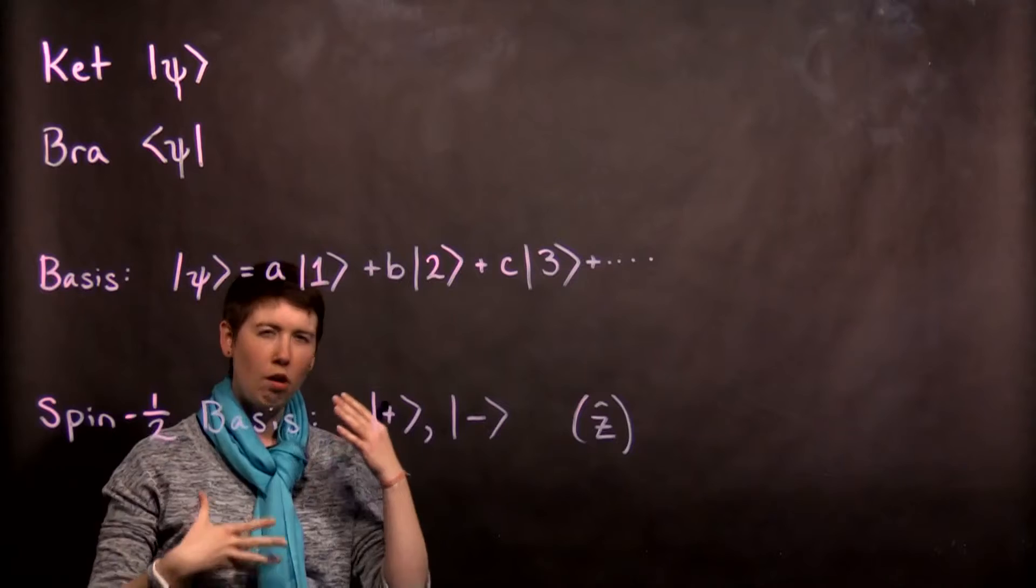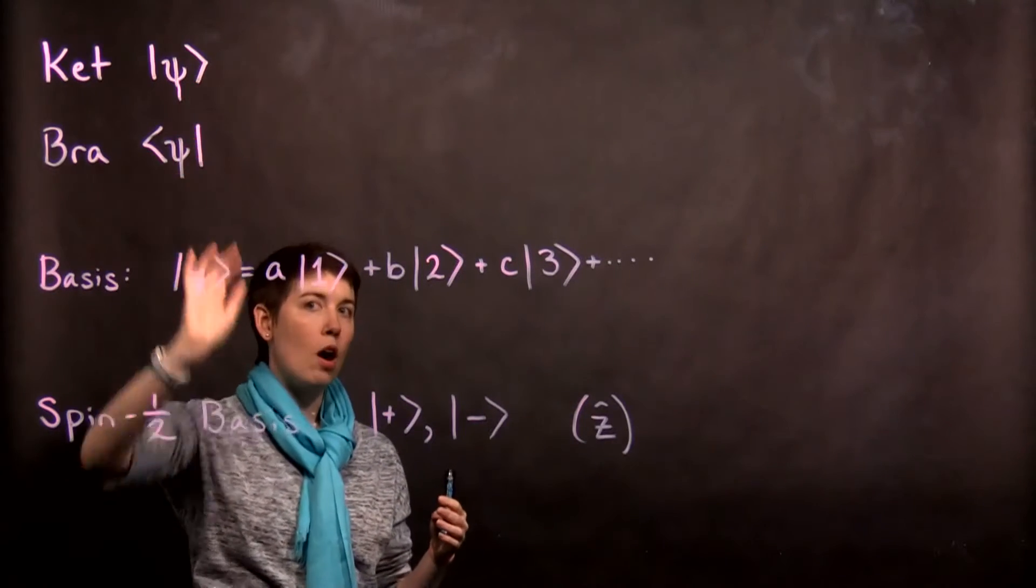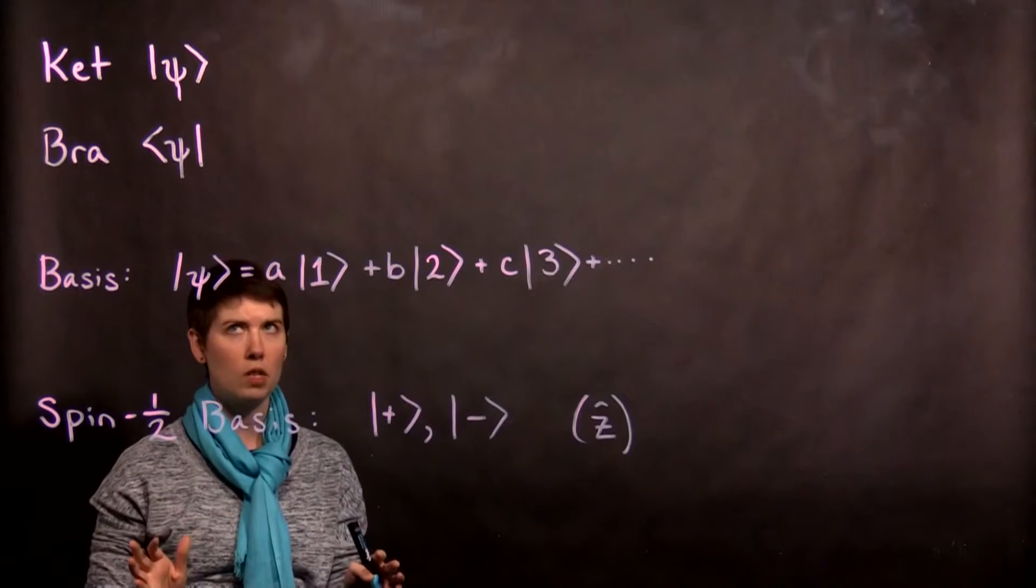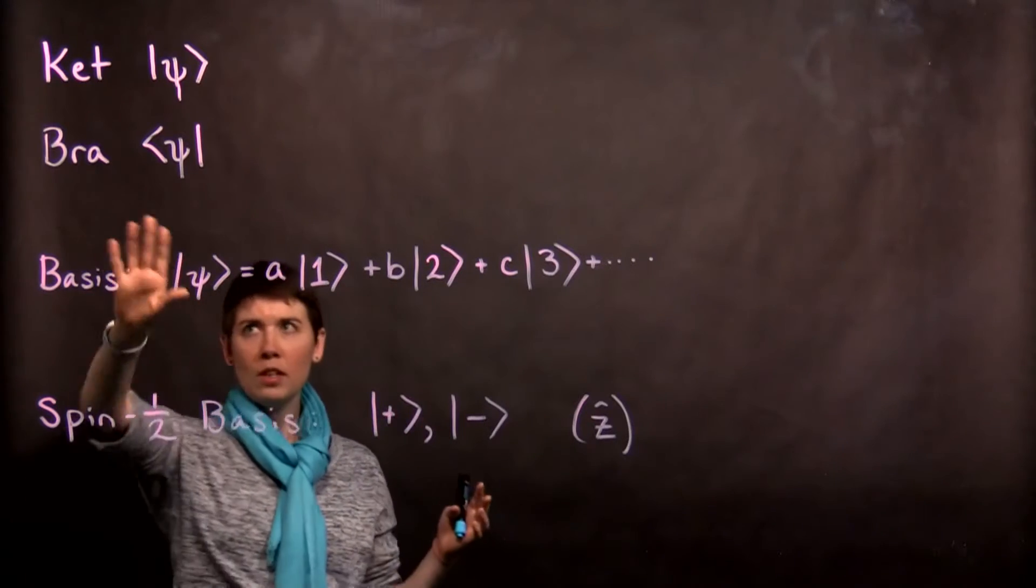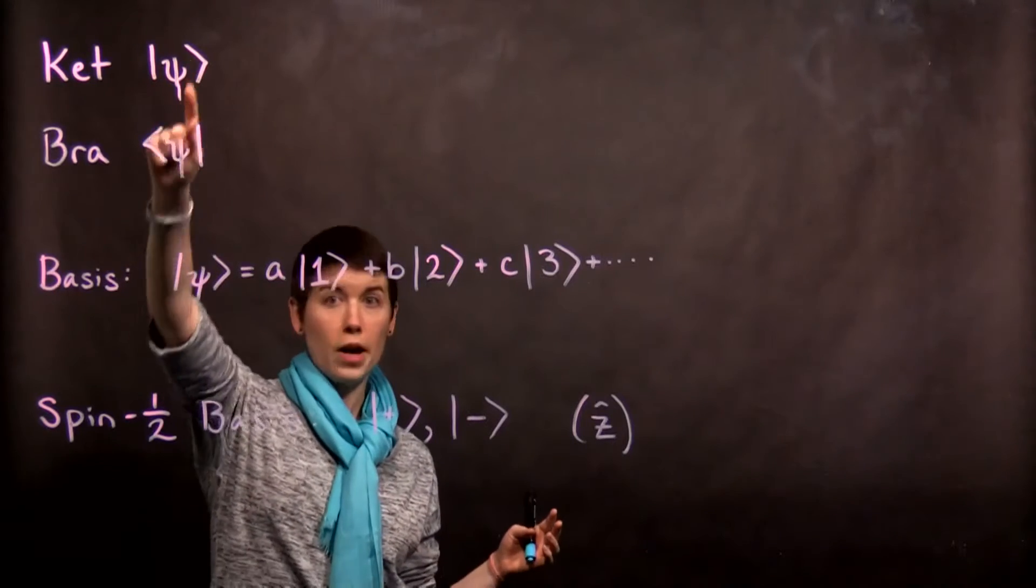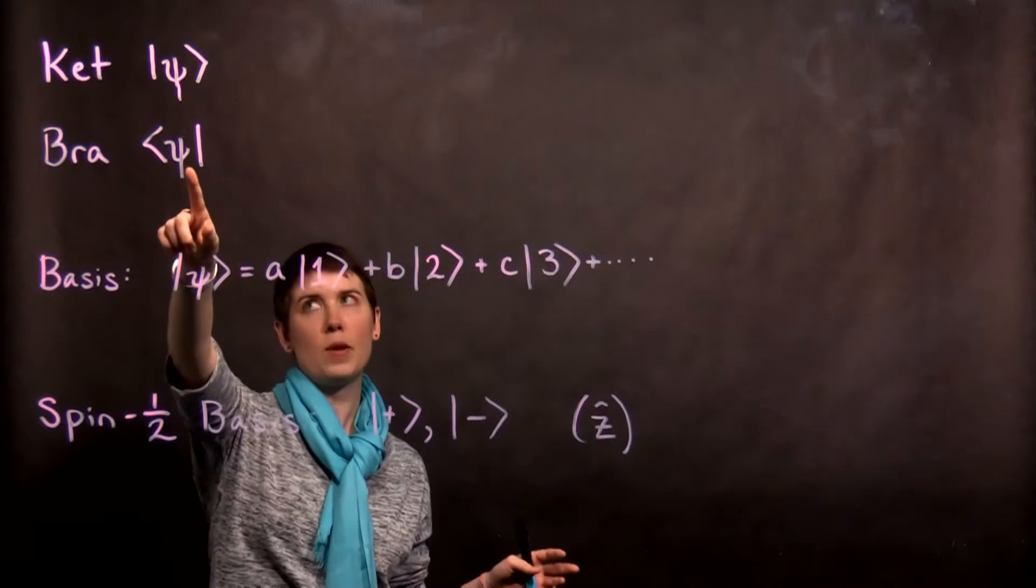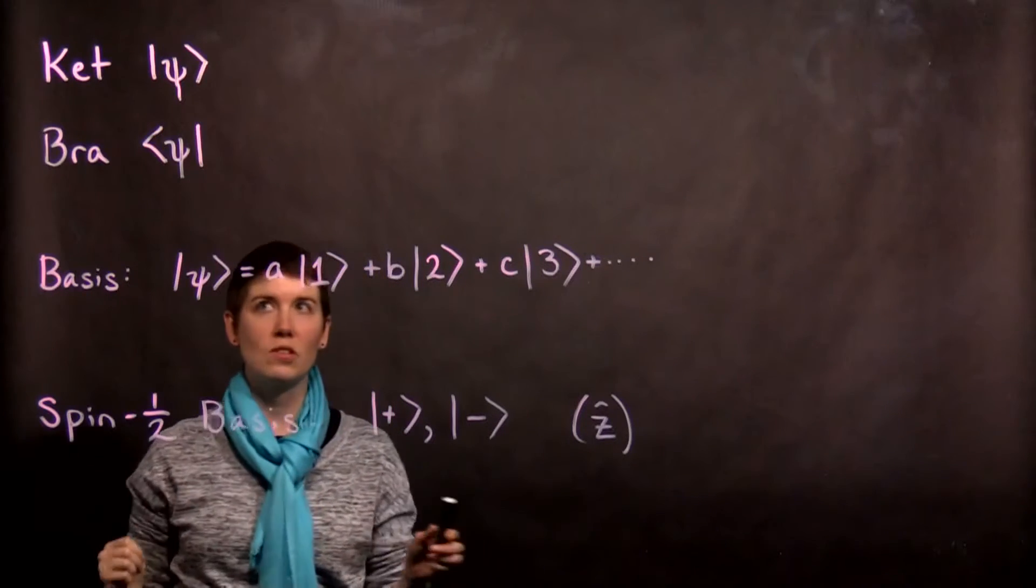And part of where all of that linear algebra stuff comes from is the idea that our ket and our bras live in separate vector spaces. So I just want you to know that this exists, so the way you write it matters. These mean two different things, they refer to different vector spaces. But right now we're going to focus on ket.